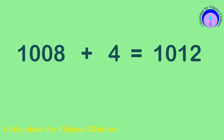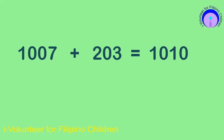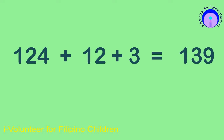1,008 plus 4 is equal to 1,012. 1,007 plus 203 is equal to 1,010. 124 plus 12 plus 3 is equal to 139.